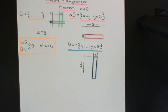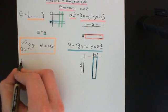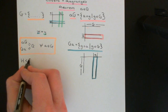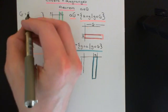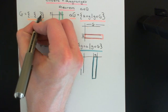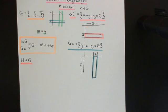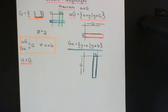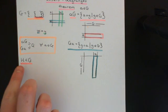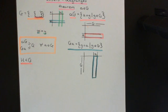So in a group composition table, all rows and all columns contain every element of the group once and only once. The next thing to refresh before we go on to the concept of cosets is the concept of a subgroup. Let's say capital H is a subgroup of our group capital G. A subgroup, first and foremost, is a subset of the elements of the group — a subcollection of the symbols in that set.